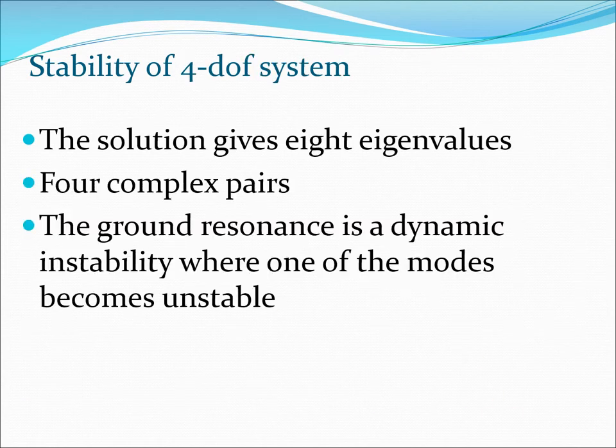The solution of this equation gives us eight eigenvalues for the problem, and typically they are going to be four complex pairs. Ground resonance is the dynamic instability which would happen if one of these modes becomes unstable. That's the situation where this system essentially tells you where ground resonance is taking place.